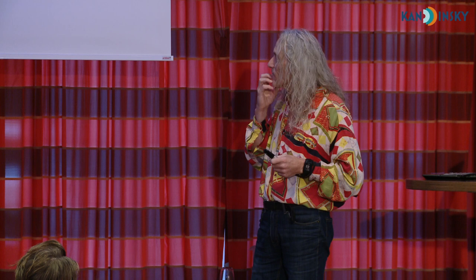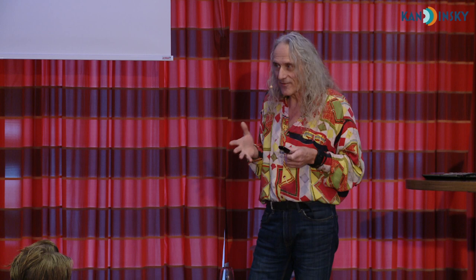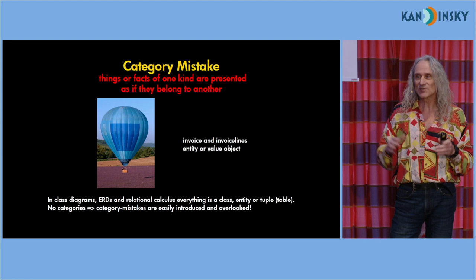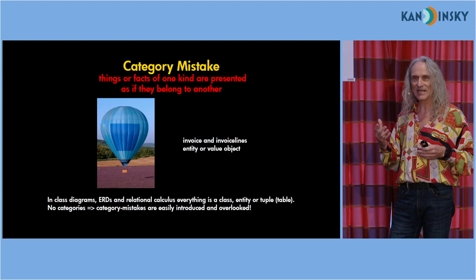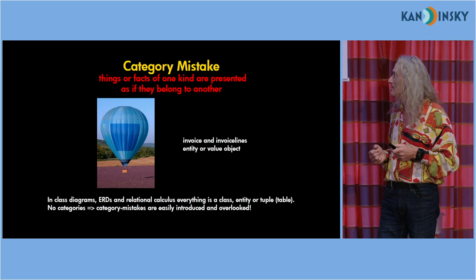You have that for instance if you say 'I have an invoice and the invoice lines' — those are two things of a different category. You can't put them conjunctively or disjunctively in one sentence together without making a category mistake. Conjunctively is with 'and', disjunctively is with 'or'. But if we are modeling, often in domain-driven design, we make a class diagram where everything is a class. Or in a relational database, everything is a table — so you can have a table for invoices and a table for invoice lines. You don't see the different categories anymore and thereby, by using technical language, you introduce a category mistake.